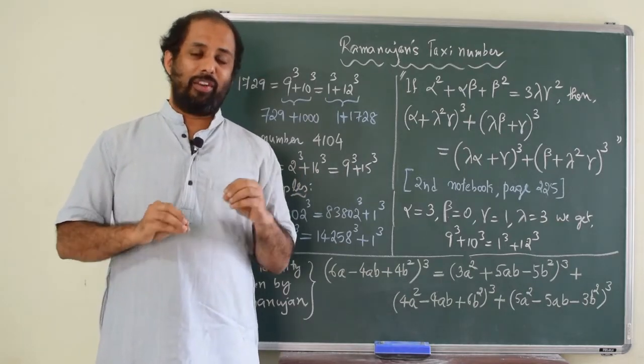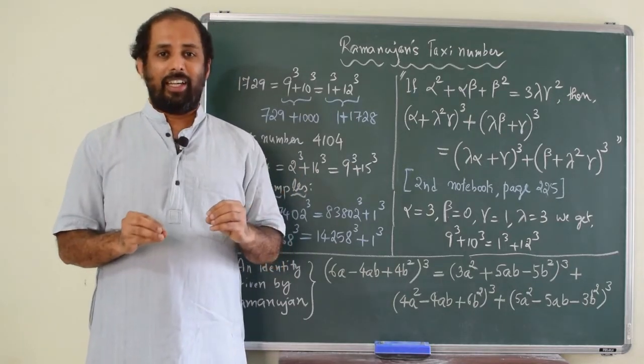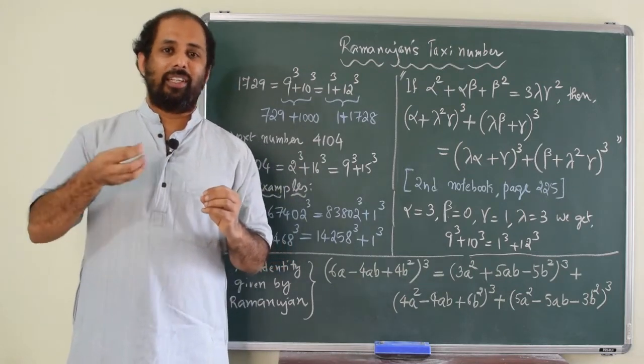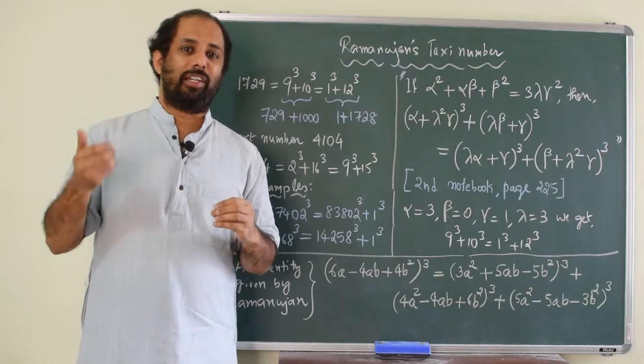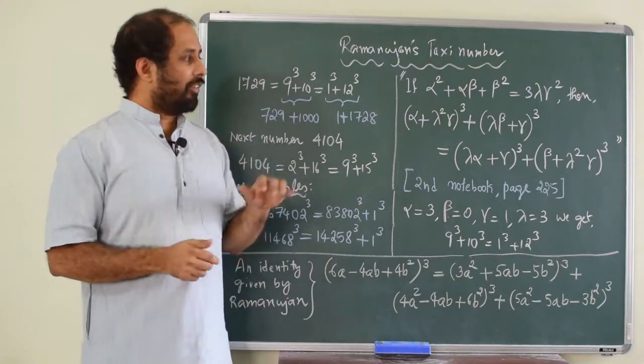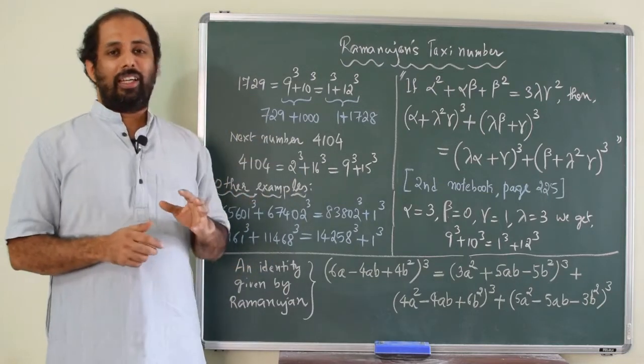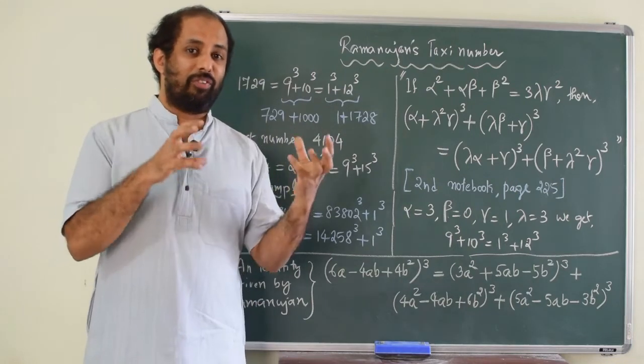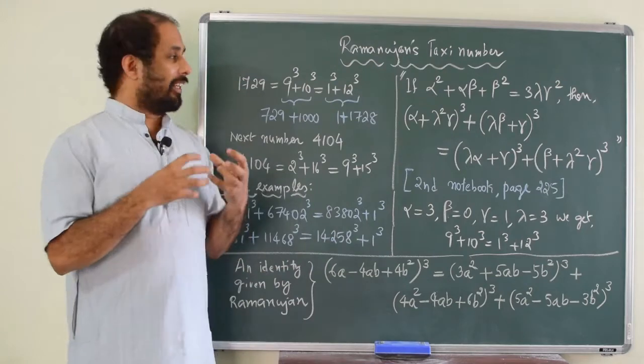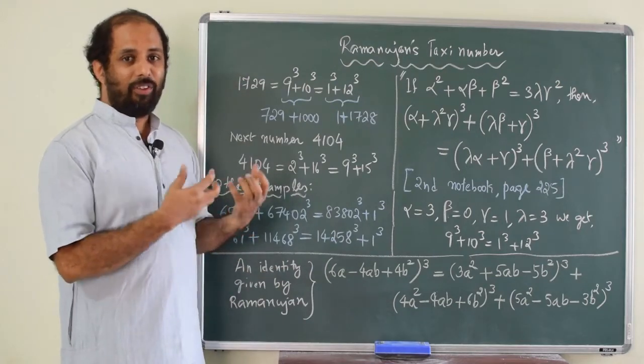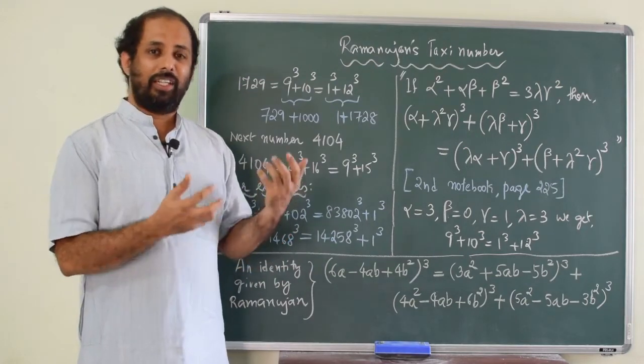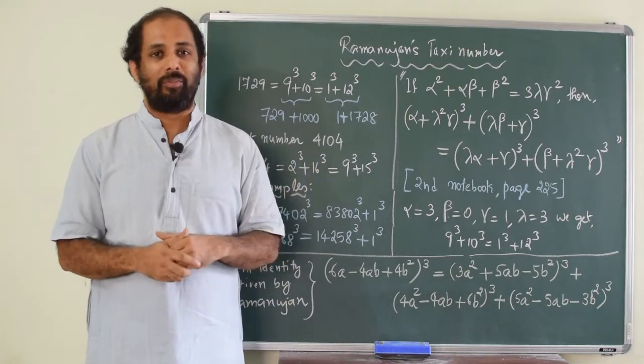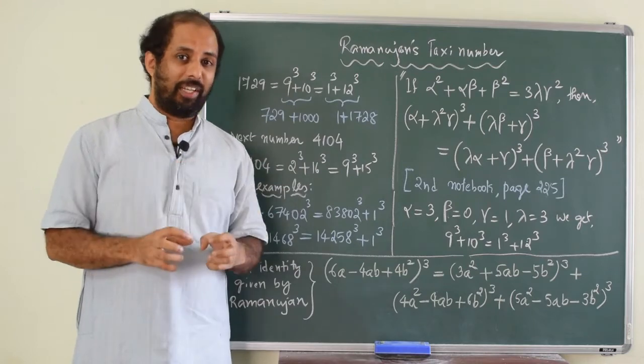Now, the specialty of Ramanujan is, whenever he used to find some new result, he never used to stop there. He used to take it to the level, extreme level of human intellectual capacity. So, even in this case 1729, he understood that this number is the smallest number which can be written as sum of two cubes in two different ways, like 9 cube plus 10 cube and 1 cube plus 12 cube. So, this number can be written in both ways. And this is the smallest such number which exhibits this property. And then he did not stop there.